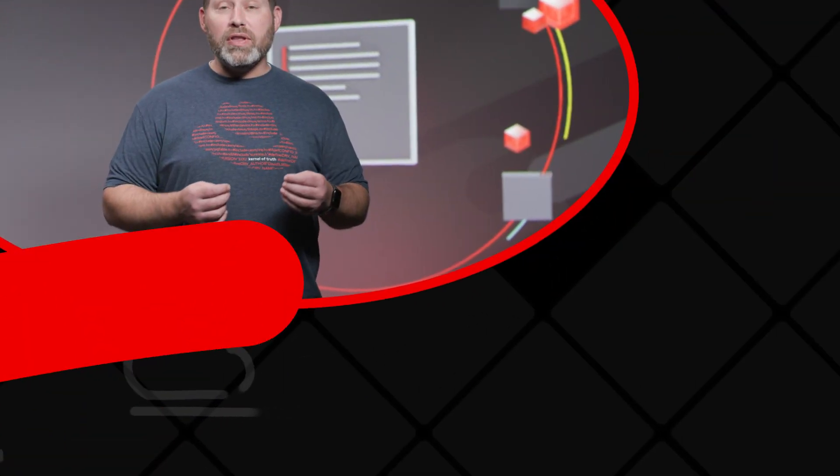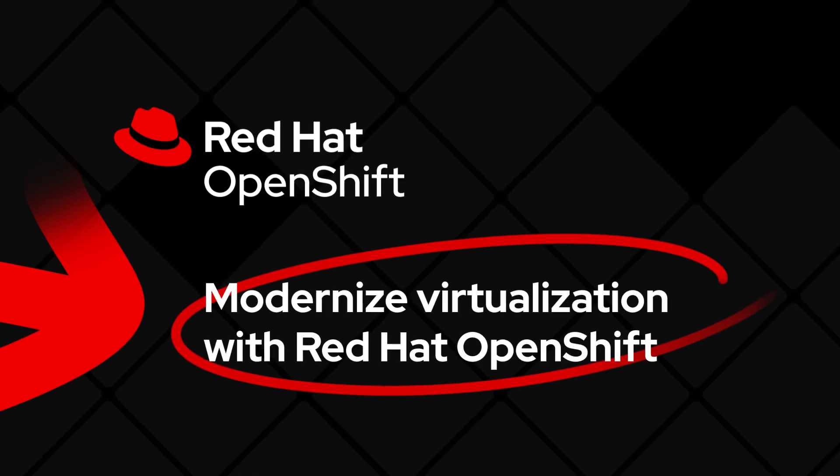While it might not make for the most exciting demo, it's still critically important to many aspects of our organizations. For at least a decade now, we've been talking about containers and Kubernetes as the future of applications. But reality is that the vast majority of applications and application data resides in virtual machines. And we don't have to change that. OpenShift virtualization brings virtual machines as native objects into Kubernetes.